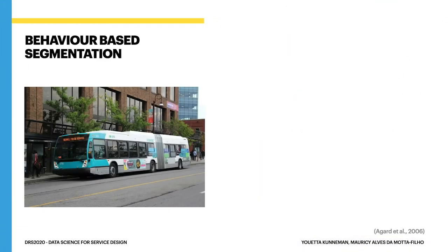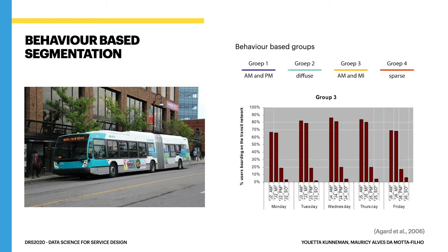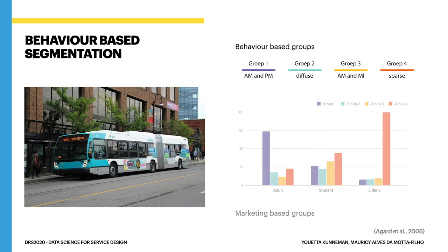In this example, there's data from public transport in Canada. With segmentation, the algorithm found four groups of behavior based on check-in and check-out date stamps. Comparing these behavioral groups to marketing-based groups, we can see that students can have different kinds of patterns during the day, while for elderly there is one dominant behavior. We can use this to target different activities during the day at students or elderly.